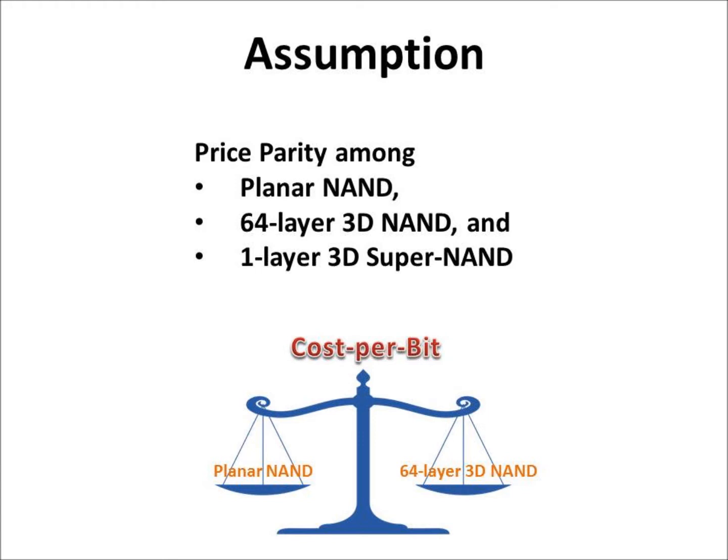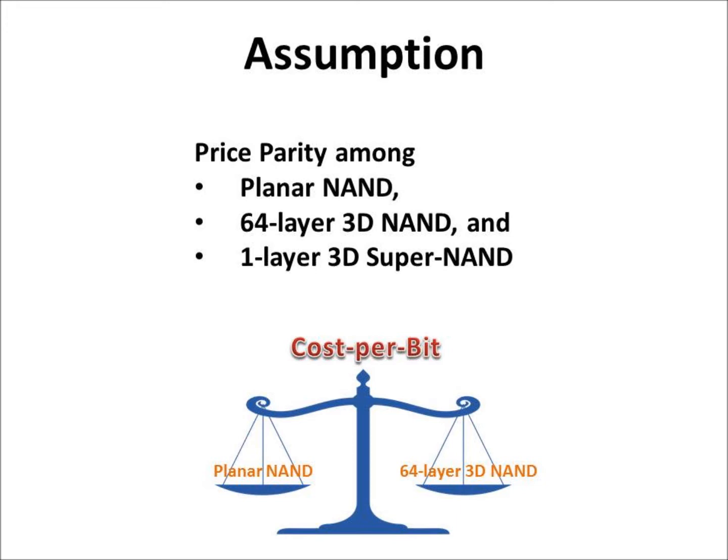Let me start with an assumption first. There is price parity among Planar NAND, 64-layer 3D NAND, and 1-layer 3D SuperNAND. Recently, in a press release, Samsung mentions that it will focus on functionality rather than cost per bit of 3D NAND. So Samsung's 64-layer 3D NAND will still be more expensive than Planar NAND. However, SanDisk said its 64-layer 3D NAND is the first point where its cost is competitive with 2D NAND, if it could achieve mature yield. So it is fair to say that 64-layer 3D NAND will achieve price parity with Planar NAND.